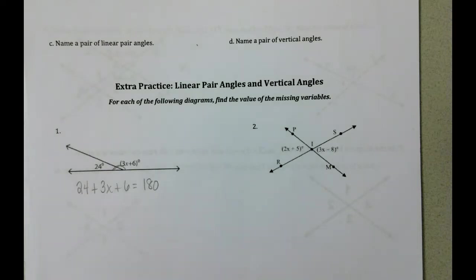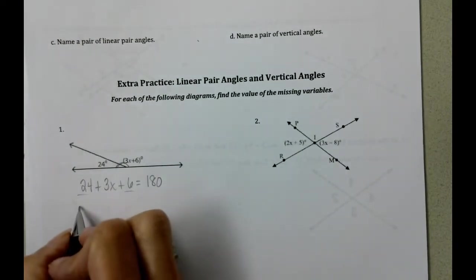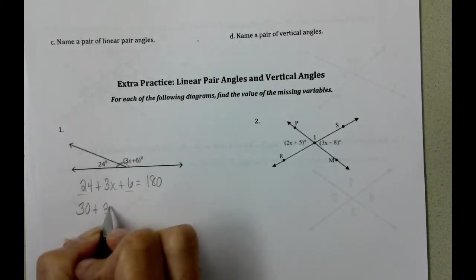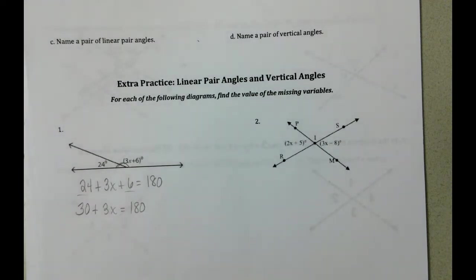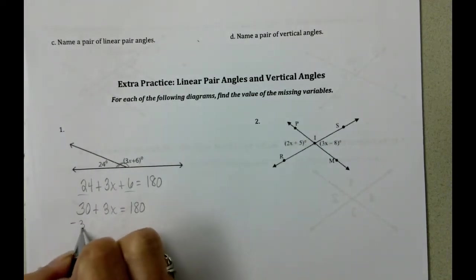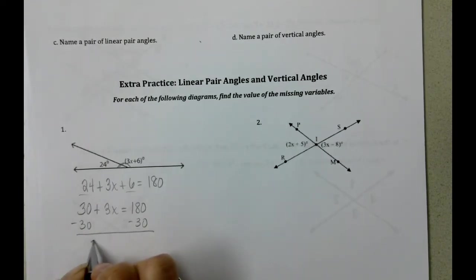Now what we have to do is we have to solve this equation. So we're going to combine like terms and get 30 plus 3x equals 180. We're going to subtract the 30 from both sides. And we get 3x equals 150.